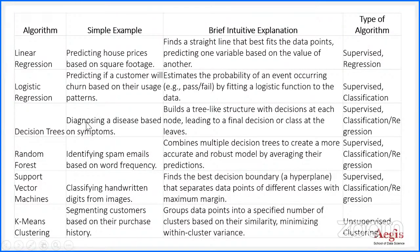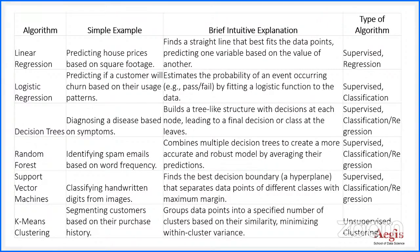Decision trees are quite natural to human instincts and are used for diagnosing diseases — similar to how a doctor asks: are you coughing? What is your temperature? Are you feeling hungry? Based on these binary inputs, it eliminates possibilities and identifies the most likely disease. It is a tree-like structure, simple yet efficient and explainable. Random forest is a further extension — combining multiple trees and taking the aggregate decision. It can be used for spam email detection.